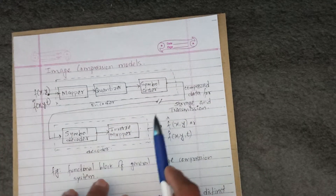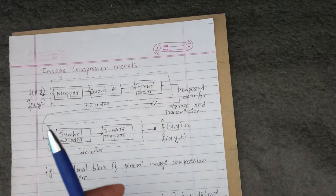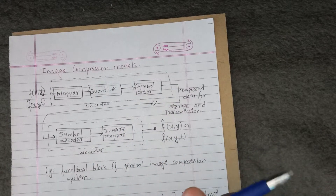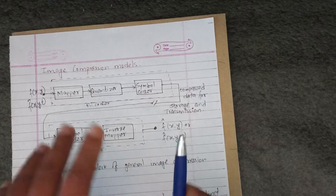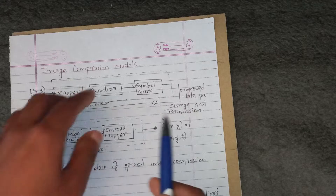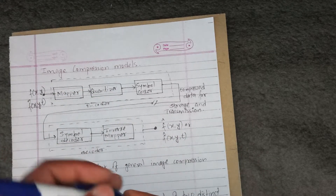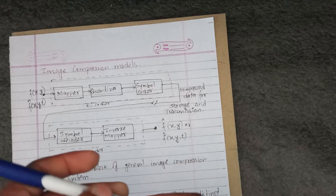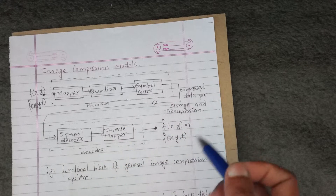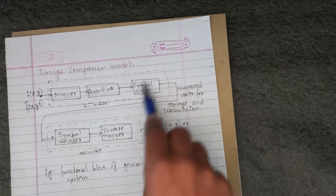If you can use it, then we can use a symbol coder — this can be called Huffman coding or run-length coding. Variable length coding is better than fixed length coding. The most frequently occurring quantizer value gets a low bit representation, while less frequent values get longer bit representations.